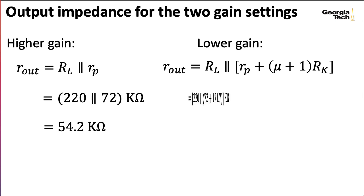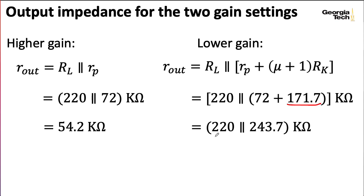All right. So what about that lower gain setting? We now have this 171.7 being added to the 72. So we now have something like 220 in parallel with 243.7 instead of 220 in parallel with 72. So as you might expect, this gives us a worse output impedance. And actually, neither of these output impedances are great. So it's very common to follow something like this with a cathode follower that has much better output impedance. If say you're driving a passive tone stack, which we'll look at later in the semester. Or you might just make sure that you're feeding something that has a very high input impedance, like another common cathode stage, where it doesn't matter that this output impedance is so mediocre.